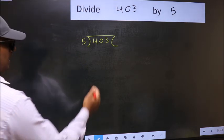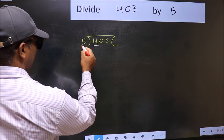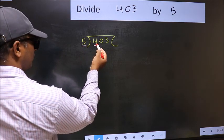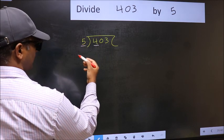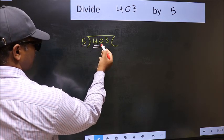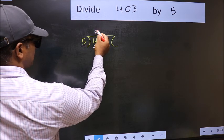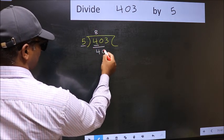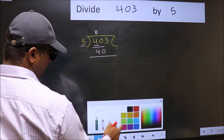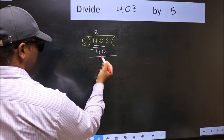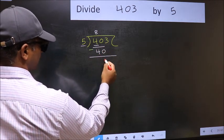Here we have 4 and here 5. 4 is smaller than 5, so we should take 2 numbers: 40. When do we get 40 in 5 table? 5 eights 40. Now you should subtract. 40 minus 40, 0.